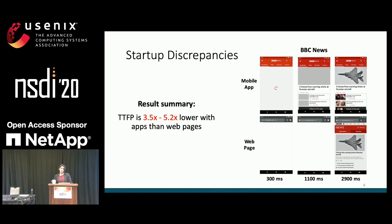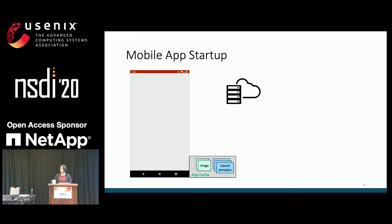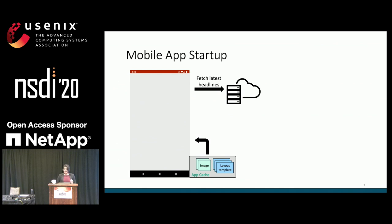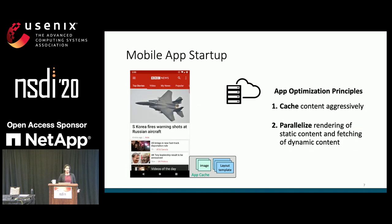Mobile apps start by caching layout templates and logo images that define the basic visual structure of the app. When users load the app, it immediately sends a request to get the latest dynamic content like headlines, and while waiting for the response it renders the cached content to the screen. Then when the dynamic content arrives, the app uses it to patch the screen and load the final UI.